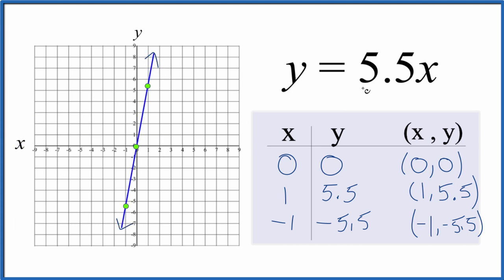And that's the graph for y equals 5.5x. I could have put any values in here for x and got the value for y, and then that point would be on the line here. I just chose these because they fit nicely on the graph paper.